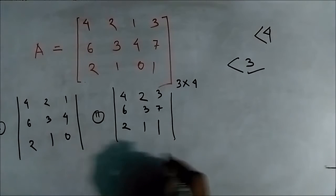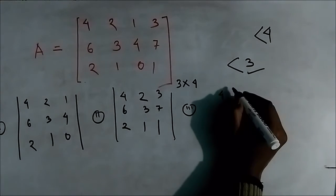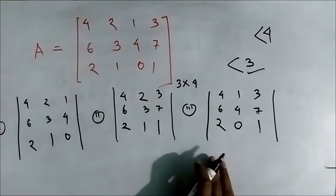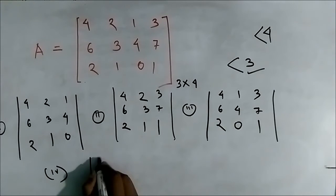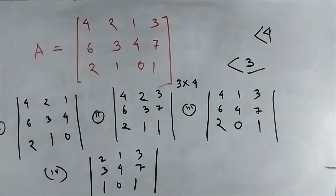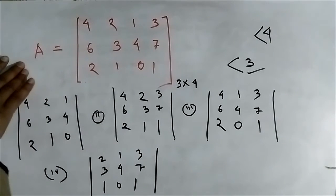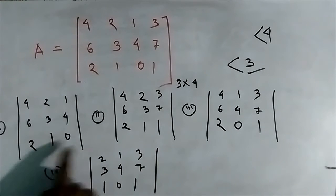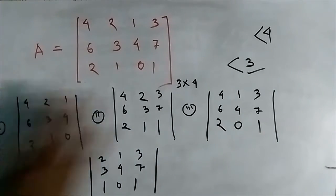The second square submatrix is: 4, 6, 2 / 2, 3, 1 / 3, 7, 1 — leaving out the third column. The third is: 4, 6, 2 / 1, 4, 0 / 3, 7, 1 — leaving out the second column. The fourth square submatrix is: 2, 3, 1 / 1, 4, 0 / 3, 7, 1 — leaving out the first column. So we have all four 3×3 square submatrices of matrix A.